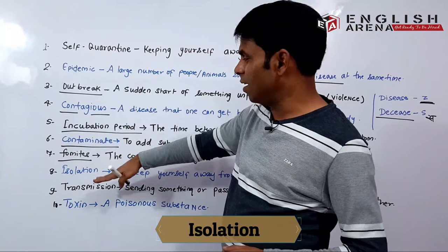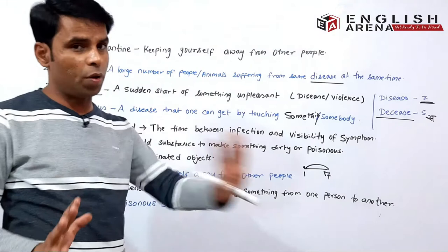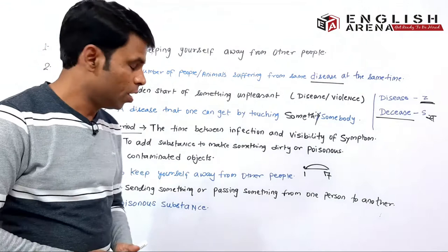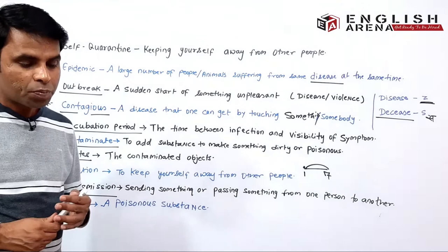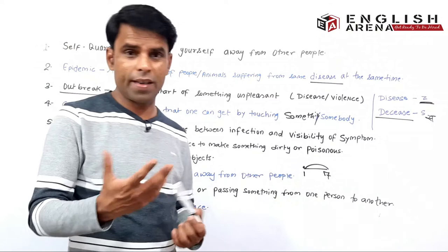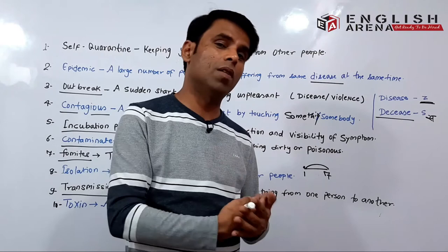The next word is 'isolation.' Isolation is a similar word to self-quarantine. Isolation means to keep yourself away from other people — apne aap ko logon se door rakhna, isolate kar lena. That is called isolation. The next word is 'transmission.' Transmission means sending something or passing something from one person to another — kisi cheez ko bhejana ya kisi cheez ko ek vyakti se doosre vyakti ko pass karna. In the case of viruses it is used a lot — corona ke case mein isi liye kaha jaata hai ki corona ka jo virus hai, ek vyakti se doosre vyakti mein transmit ho jaata hai, uska transmission ho jaata hai.